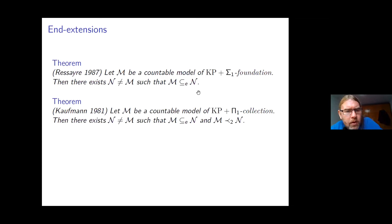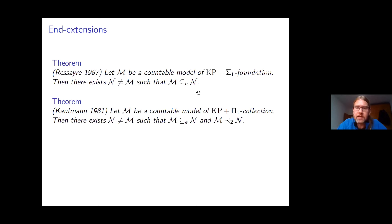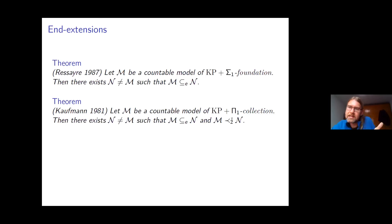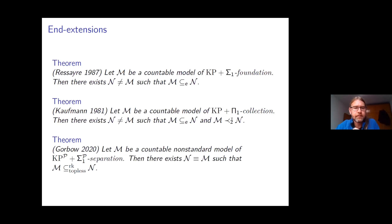I've been unable to see how, even if M satisfies more set theory, one can use Matt's techniques to get N to satisfy more set theory. Recently, Paul Gorbov showed that if M is a countable non-standard model of KPP + Σ₁ᴾ separation, then M has a topless rank extension satisfying the same theory — a self-embedding result, analogous to Friedman's self-embedding theorem: every non-standard model of this theory is isomorphic to a cut of itself.